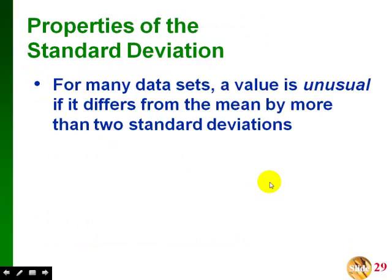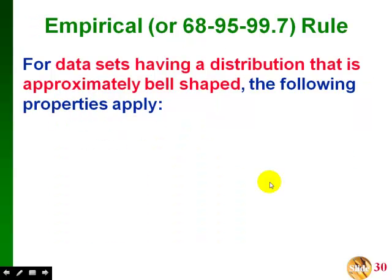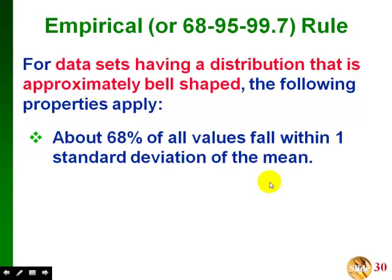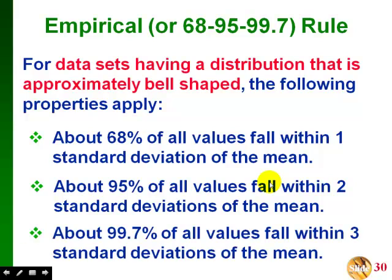Some properties of the standard deviation: for many data sets, a value is unusual if it differs from the mean by more than two standard deviations. We should really only compare standard deviations of two different data sets if they have the same scale, the same units, and means that are close to being the same. The empirical rule says that if we have a data set that's approximately normal or approximately bell-shaped, about 68% of values fall within one standard deviation of the mean, about 95% fall within two standard deviations, and about 99.7% of all values fall within three standard deviations of the mean.